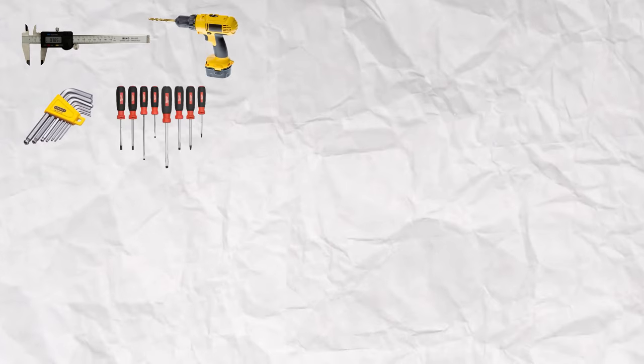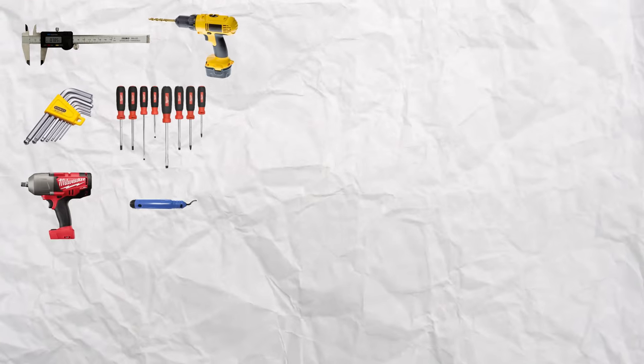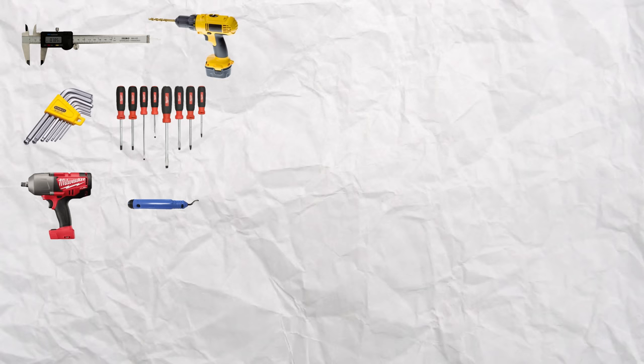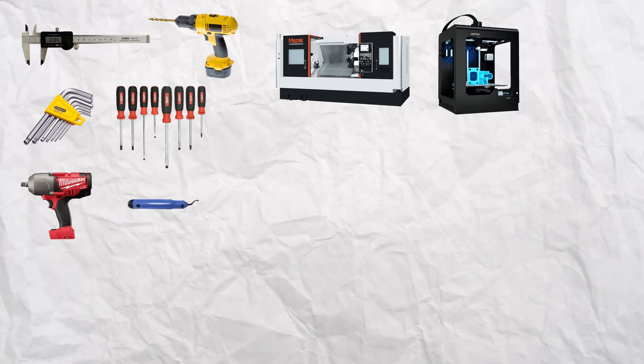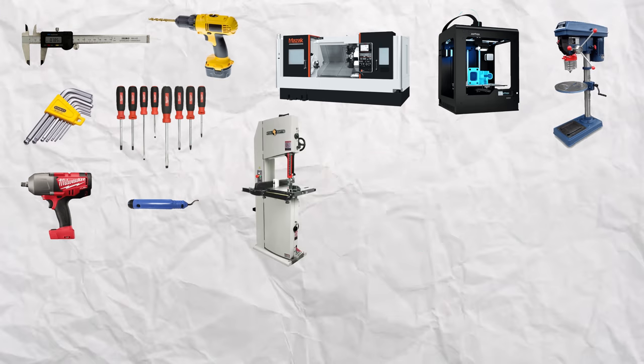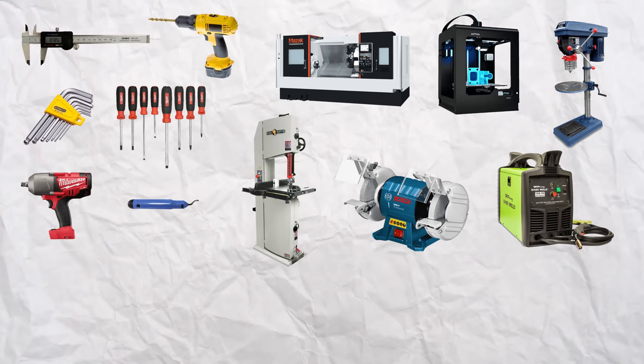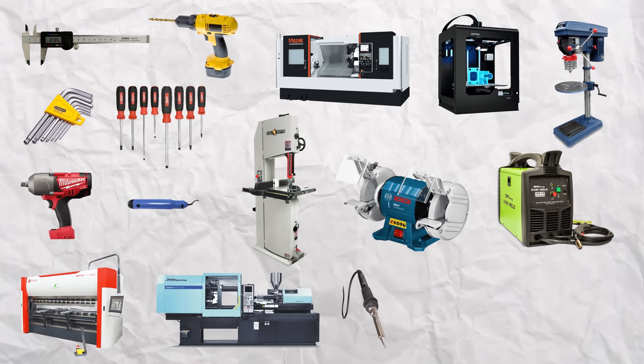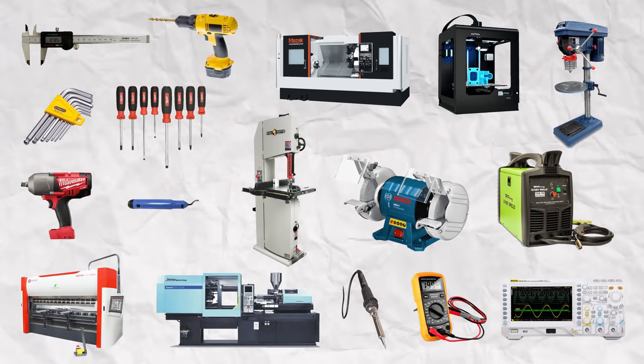If you look at any well-designed product, take this iPhone for example, hundreds upon thousands of iterations and prototypes for each component were made and tested. To build these prototypes, you will need to know how to use some essential tools and machinery. Hand tools include calipers, hand drills, allen keys, screwdrivers, impact drivers, and deburring tools. Equipment and machinery that are good to know include CNC machines, 3D printers, drill presses, bandsaws, bench grinders, welding machines, sheet metal machines, injection molding machines, soldering irons, multimeters, and oscilloscopes.